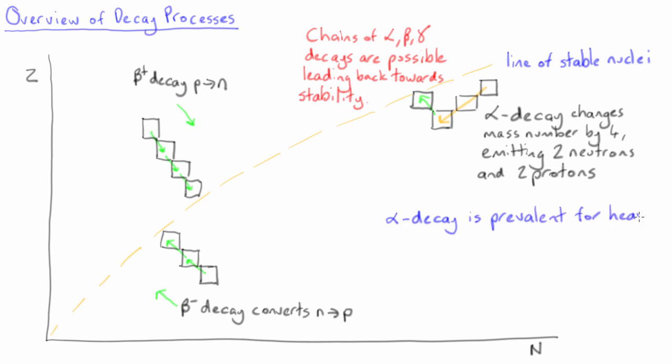Finally, we usually find that alpha decay is prevalent for heavier nuclei, while beta decay is prevalent for lighter nuclei.